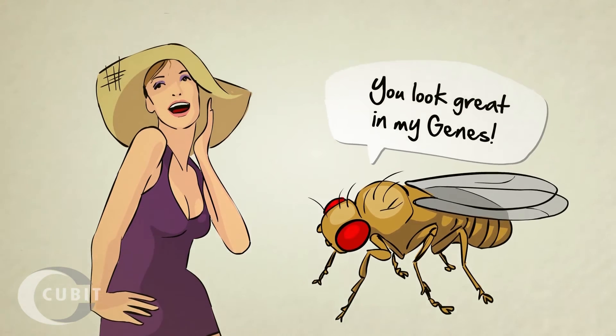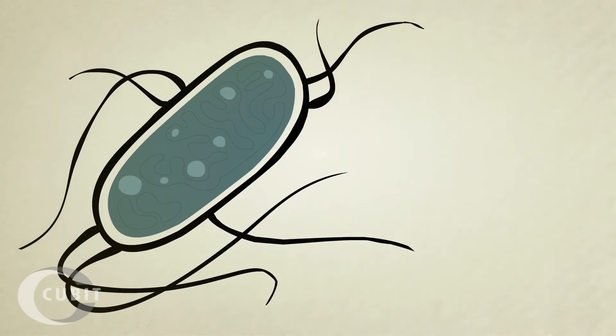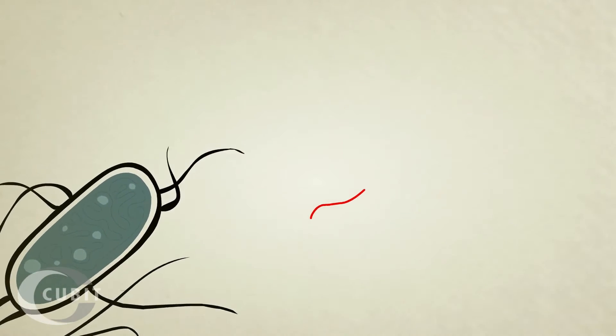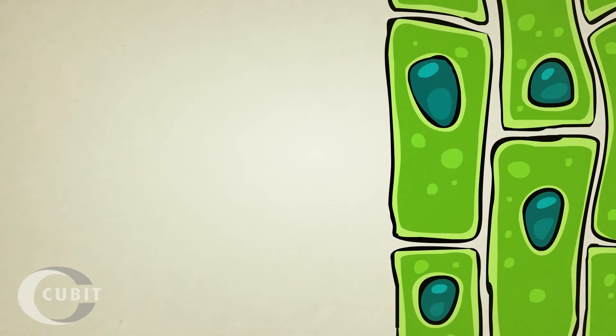Because all creatures use DNA in pretty much the same way, genetic engineers have found that if they take a gene from, say, a bacteria cell and insert it into the DNA of an animal or a plant cell, that animal or plant cell will then read the new gene and produce the bacterial protein.